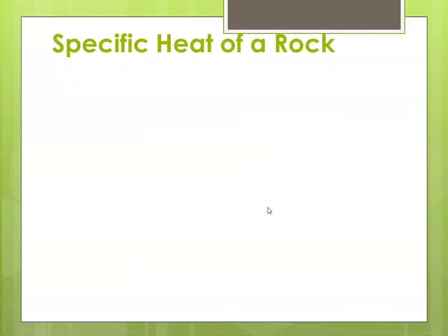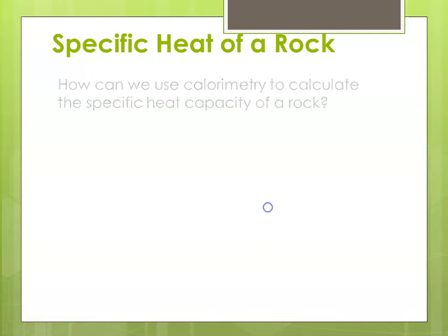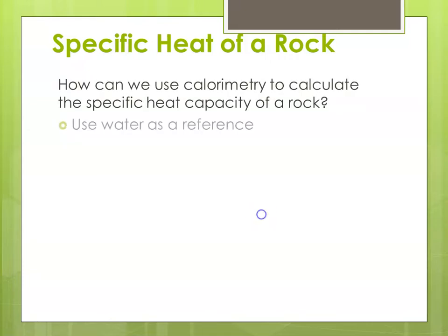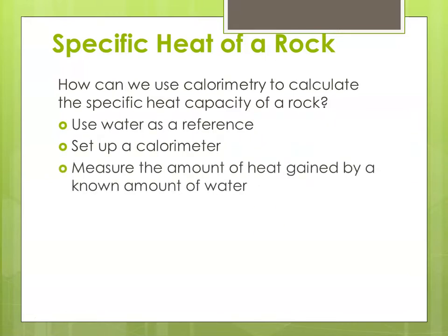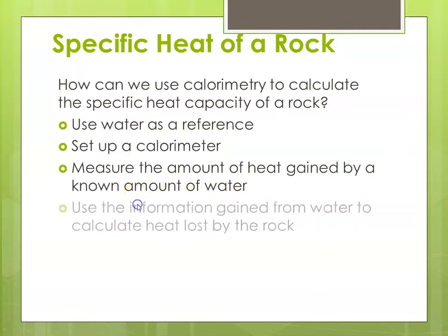Today's question is: how can we use calorimetry to calculate the specific heat capacity of a rock? We're going to use water as a reference, set up a calorimeter in Ms. Augustine's kitchen, measure the amount of heat gained by a known amount of water, and use that information to calculate the heat lost by the rock.